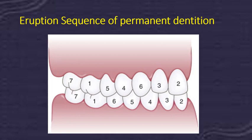In the mandibular arch, eruption also starts with the first permanent molar, followed by central incisor and lateral incisor. The key difference between the maxillary and mandibular arch is that in the mandibular arch, the canine erupts before the premolars. So the mandibular sequence is: first permanent molar, central, lateral, canine, first premolar, second premolar, then second permanent molar, followed by the third molar.